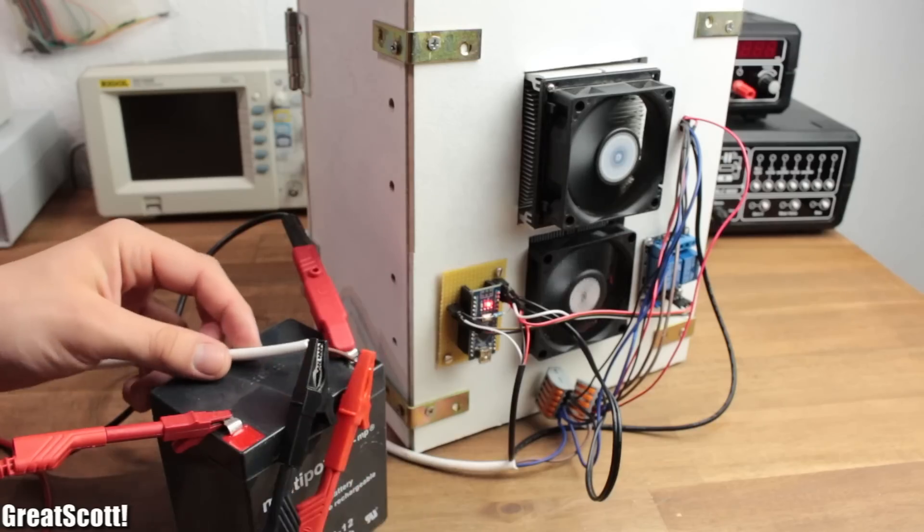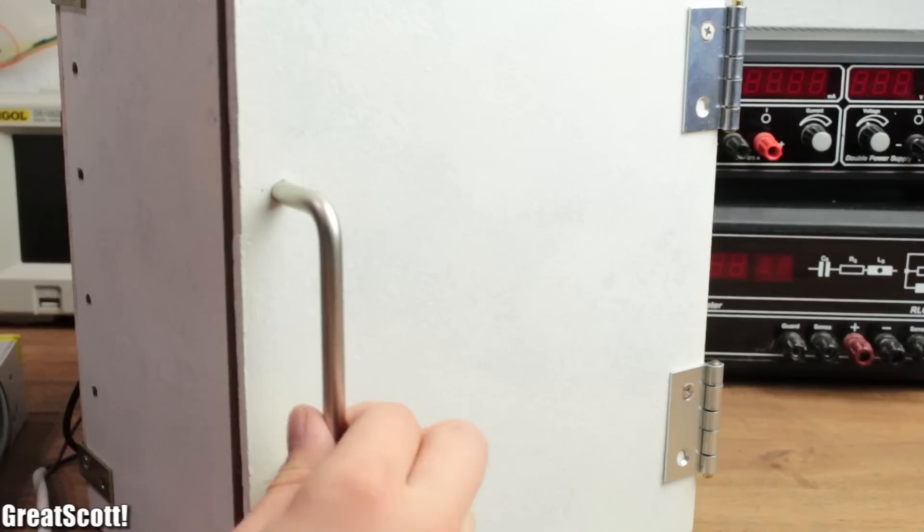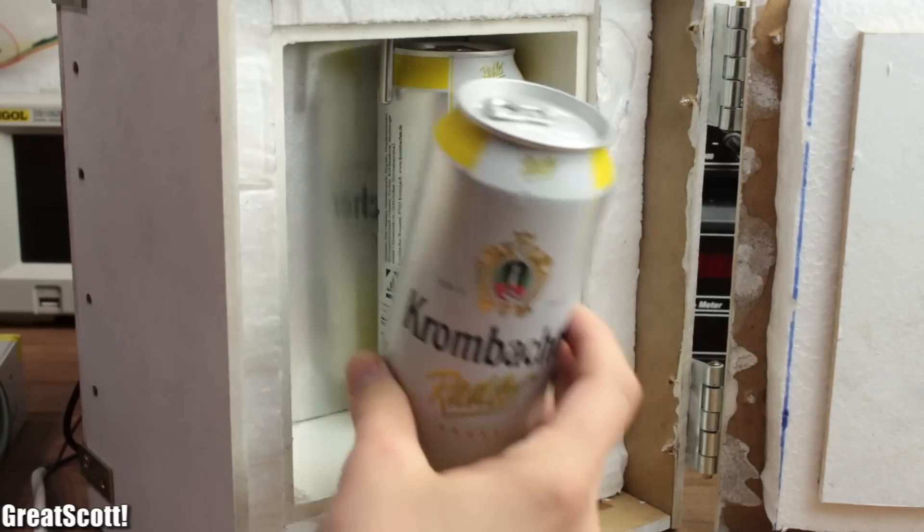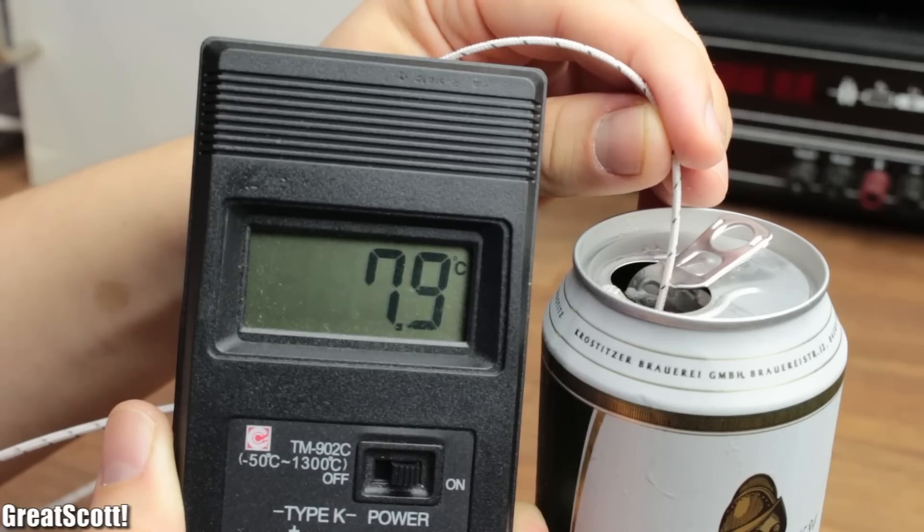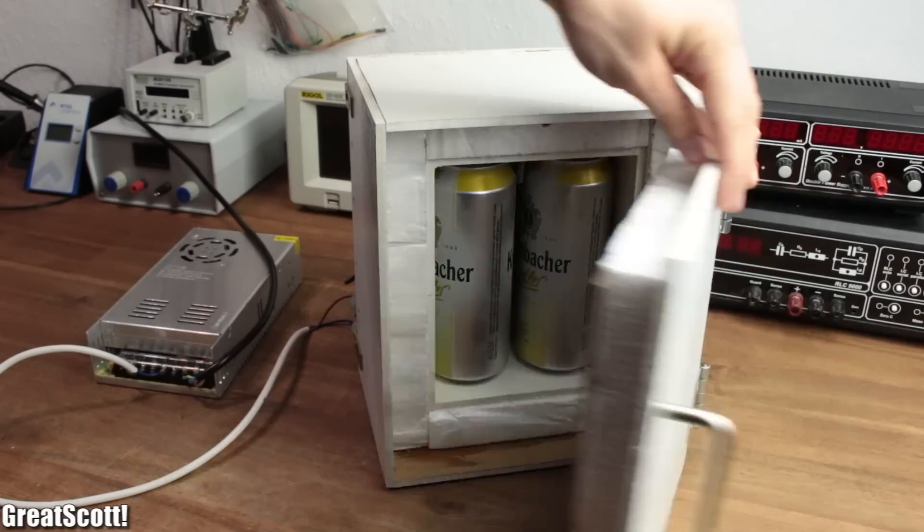If you are into camping, it offers space for two half liter cans and decreases the temperature just below 8 degrees. Perfect for a hot day. Let's get started.